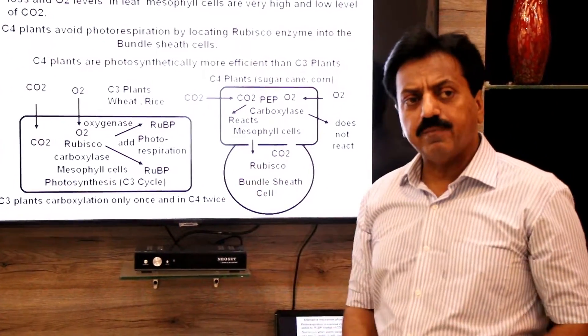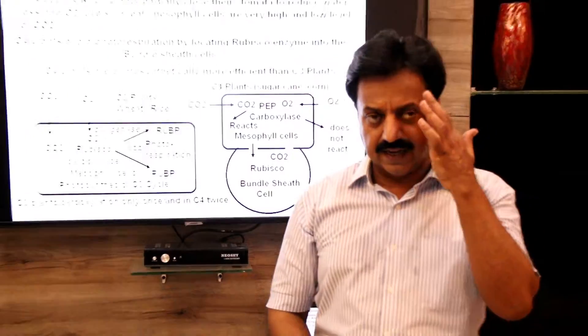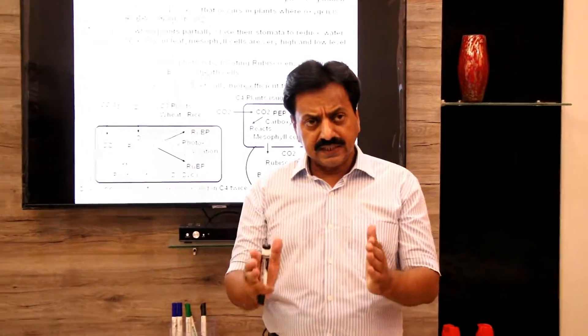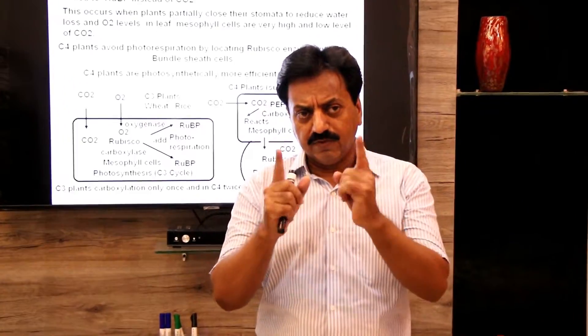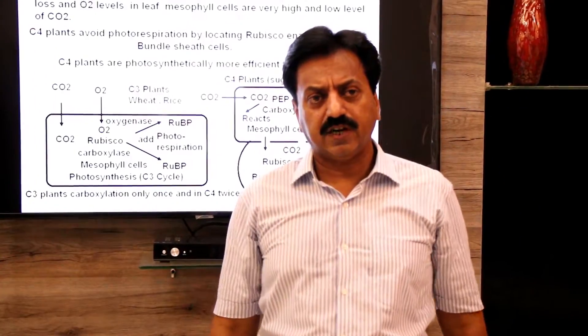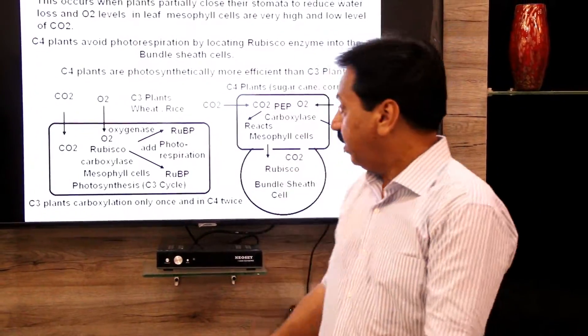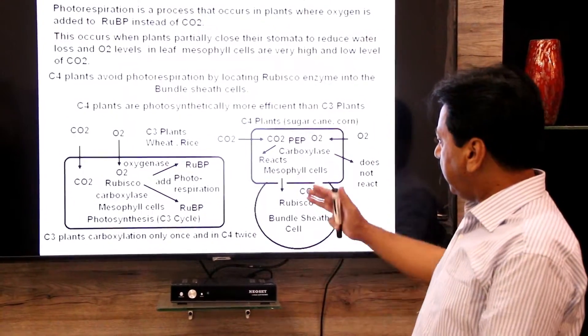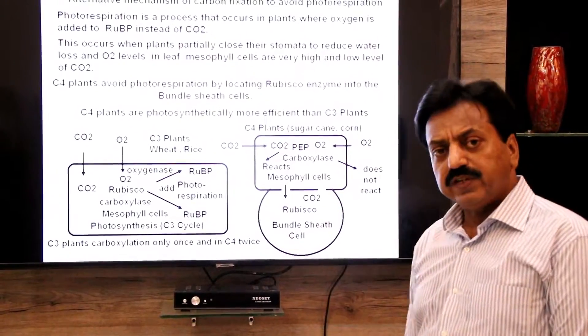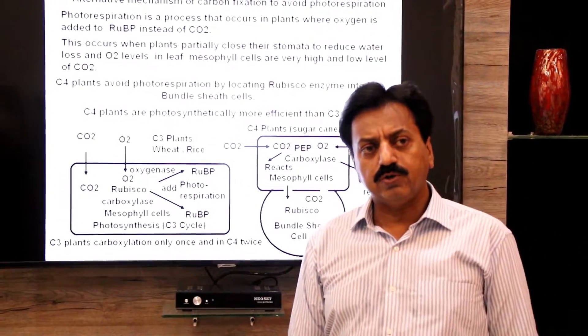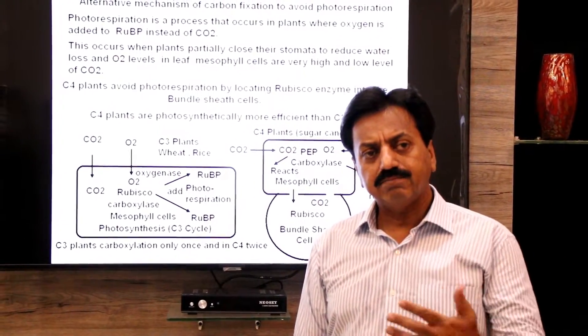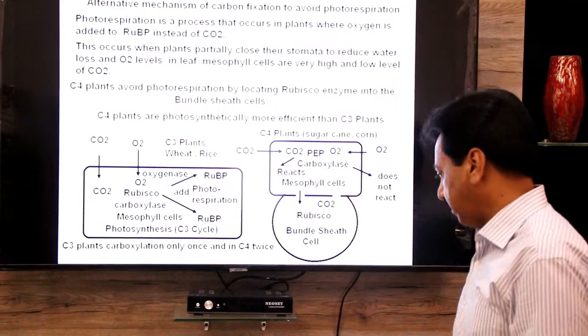In anatomy you can see a difference: in C3 plants carboxylation occurs only once, and in C4 plants twice — once in their mesophyll cells and a second time in their bundle sheath cells.